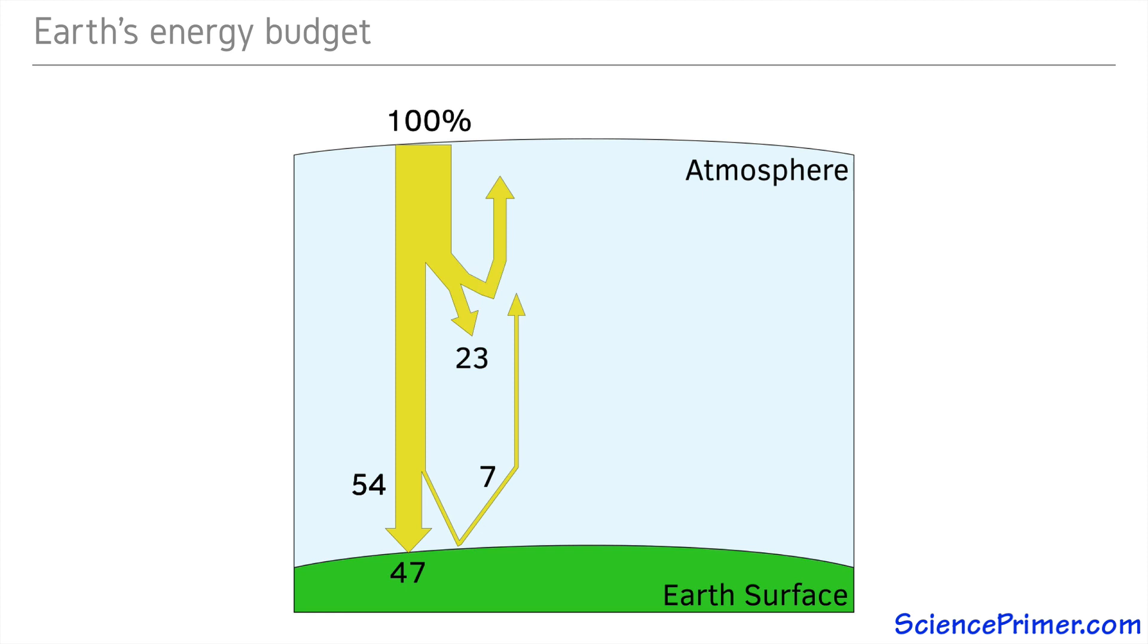Of the fraction that does not reach the surface, about half, 23% of the total, is absorbed by the atmosphere. The other half reflects right back out into space. This means that 30% of the energy that enters the atmosphere reflects back out without being absorbed.